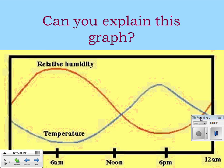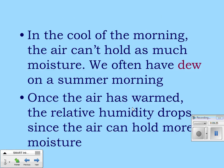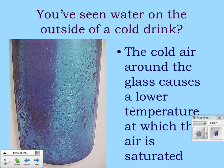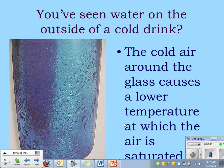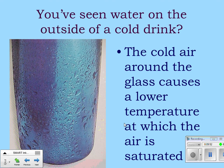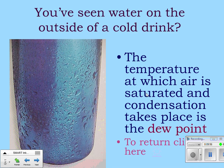As temperature increases due to sunlight, relative humidity decreases. You may have heard 'the humidity will burn off' as temperature goes up because warmer air can hold more moisture. Condensation on the side of a cold glass happens because the cold air around the glass lowers the temperature at which the air is saturated. The temperature at which the air is saturated and condensation takes place is called the dew point.